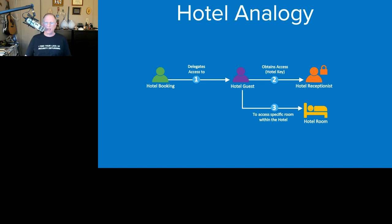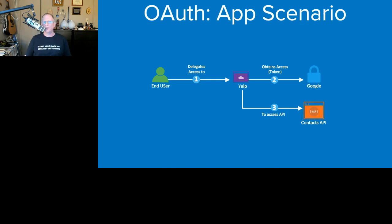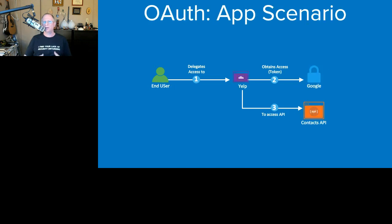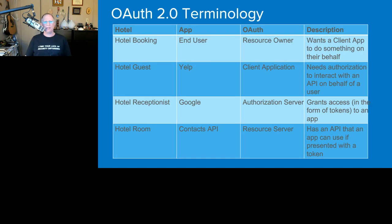Looking at the same diagram in the context of an application, the actors change but the steps are the same. An end user — that's you sitting in front of your browser — delegates access to Yelp because you want Yelp to read your contacts. Yelp obtains an access token from Google, and then uses that access token to interact with the Contacts API. Very similar to how we interact with hotel rooms.